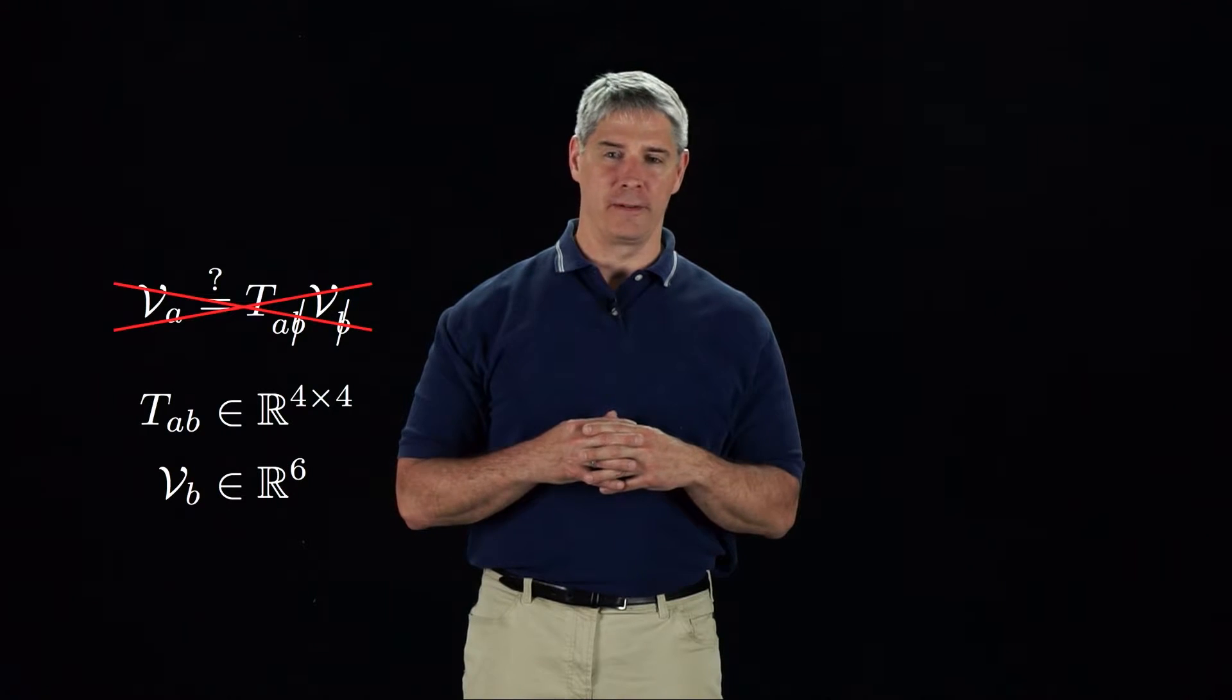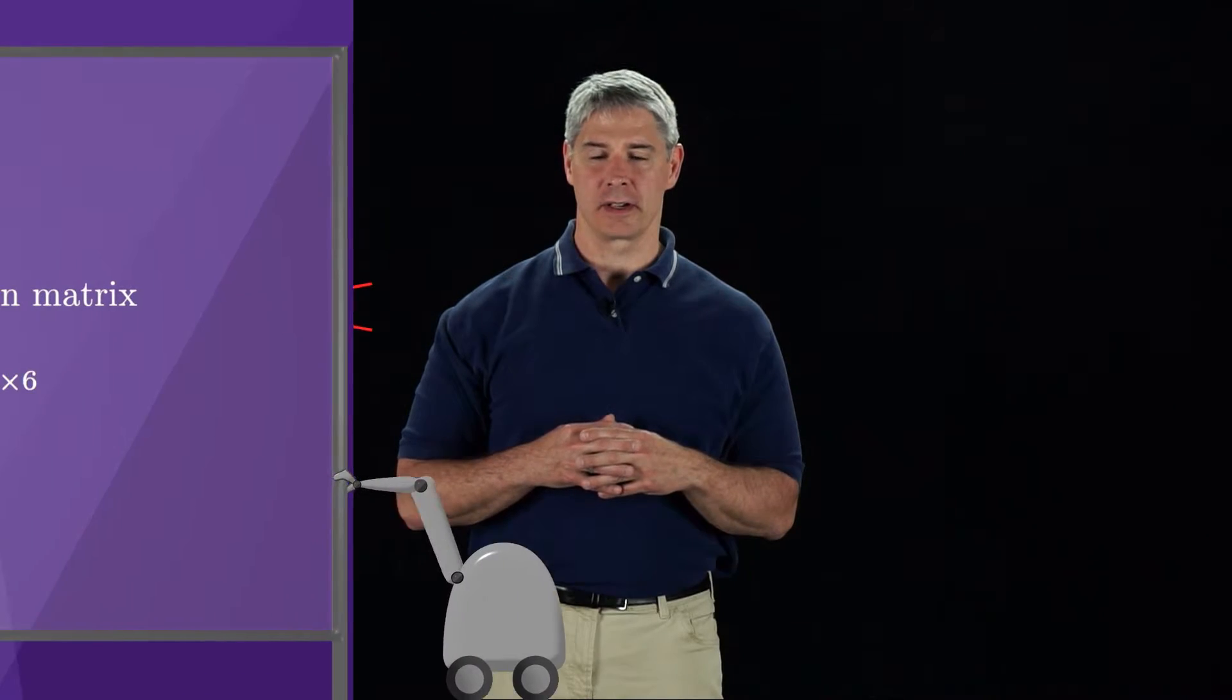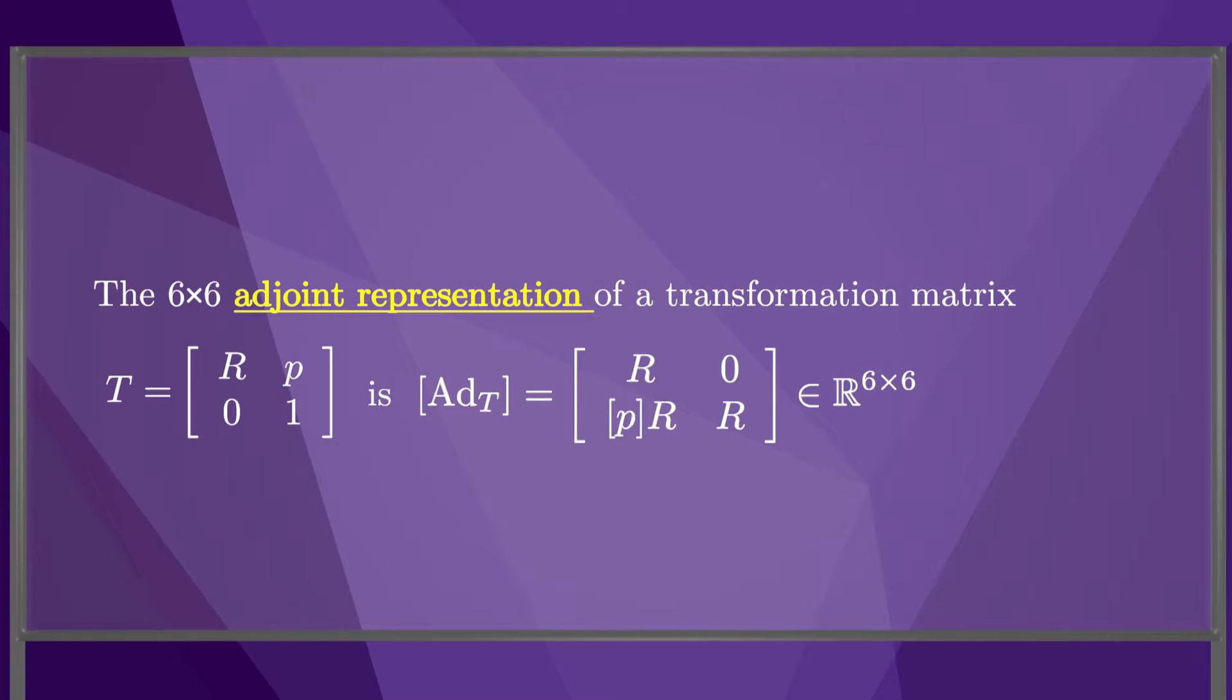It is apparent that we need to pre-multiply vB by a six by six matrix. The six by six matrix we need is called the adjoint representation of a transformation matrix, and it is defined as you see here. Now we can apply a modified version of our subscript cancellation rule to change the frame of representation of a twist.